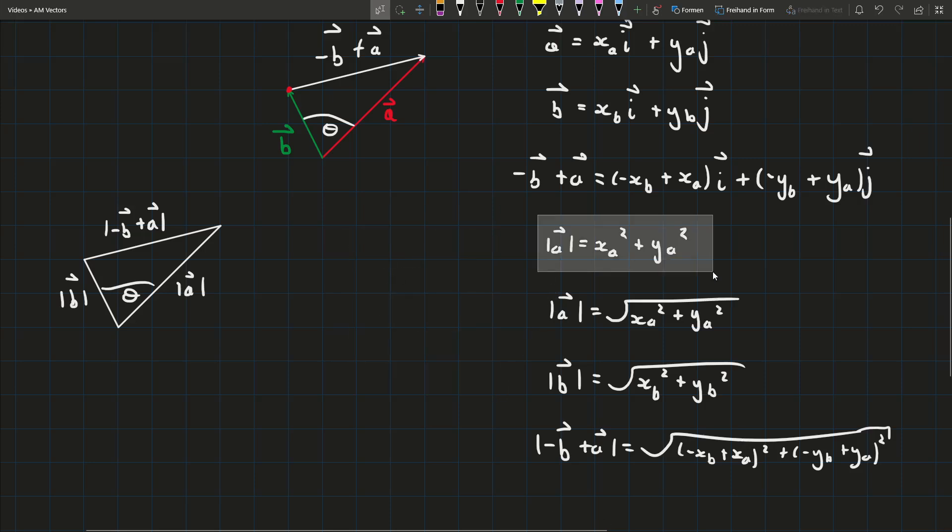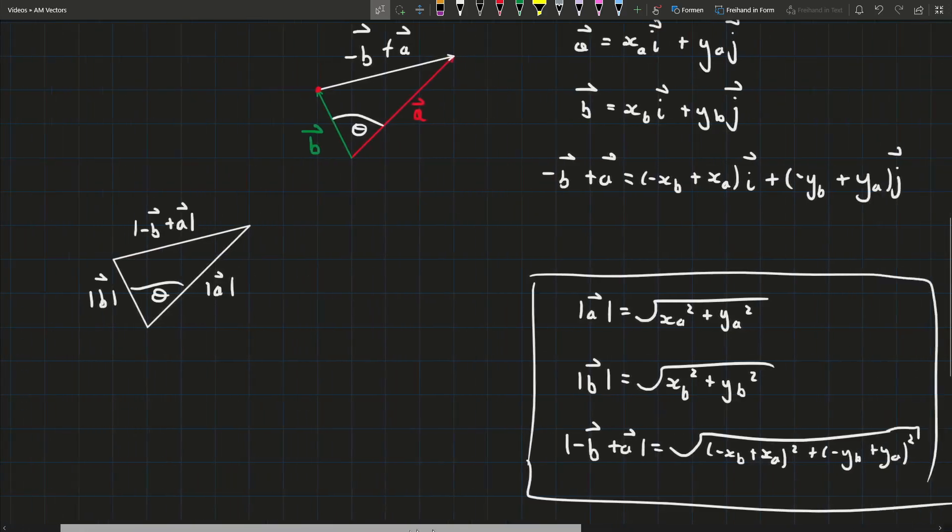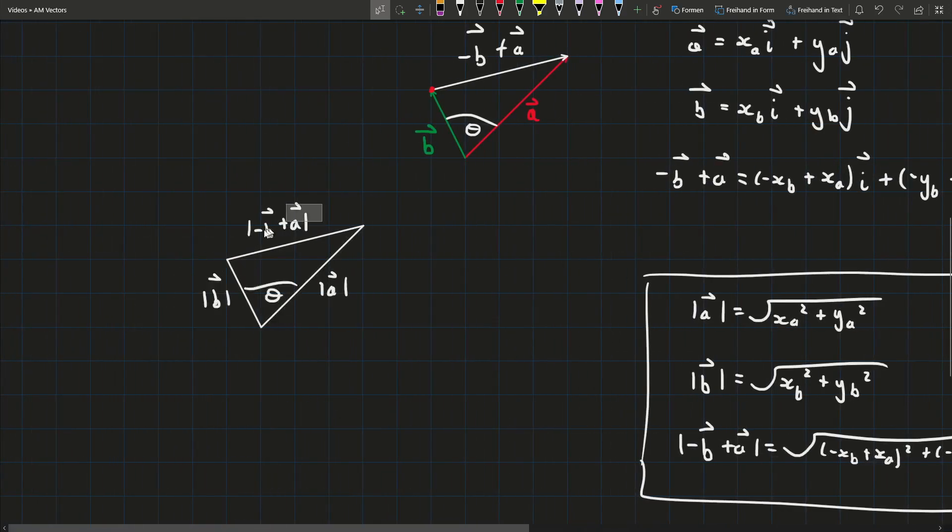So now we have our three magnitudes and we can use those with some trigonometry now. So if we want to relate an angle and three sides together a good way to do that usually is the cosine rule.